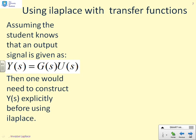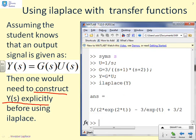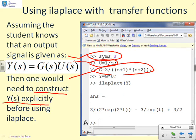To deal with transfer functions, assuming a student knows that the output signal is Y(s) = G(s)·U(s), you need to construct Y(s) explicitly before using `ilaplace`. In an example, define `s` as symbolic, define the input as a step `u = 1/s`, define the transfer function `g = 3/((s+1)*(s+2))`, then define `y = g*u` explicitly. Calling `ilaplace(y)` gives (3/2)·e^(-2t) - 3·e^(-t) + 3/2. Remember MATLAB places exponentials in the denominator, so change the sign of the exponent accordingly.